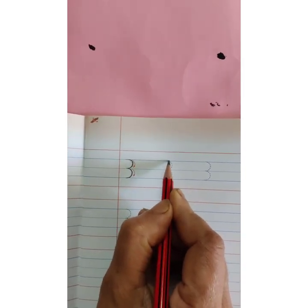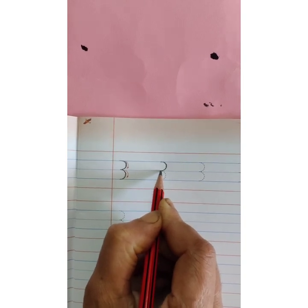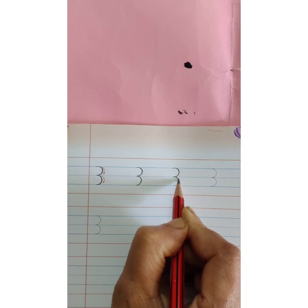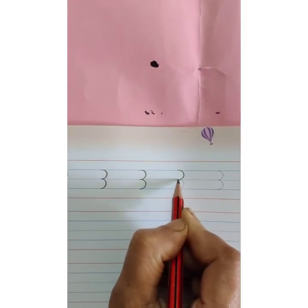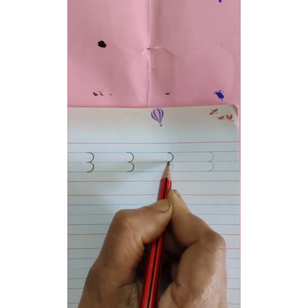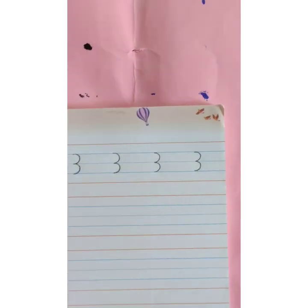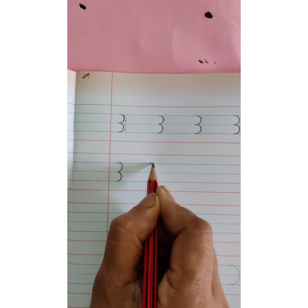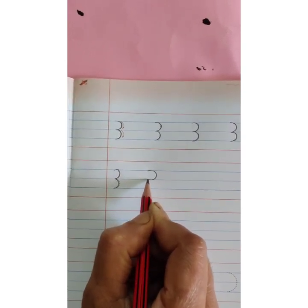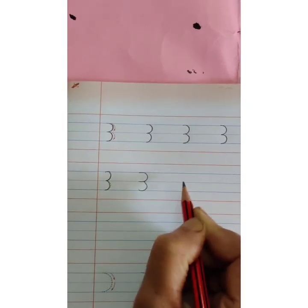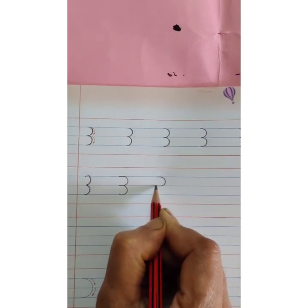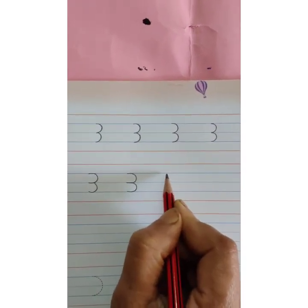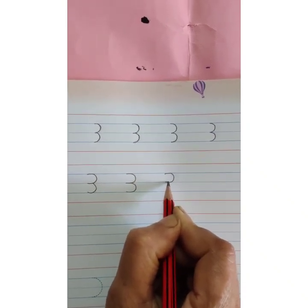Again start with the first blue line, make a curve, touch the second blue line, and again from the second blue line to the third blue line make a curve. Trace the dots like this and complete the first line. Then on the second line trace the dots. Complete this and then you are going to do it independently. Children, you have to touch the blue line — start with the first blue line, touch the second blue line, and from the second blue line to the third.